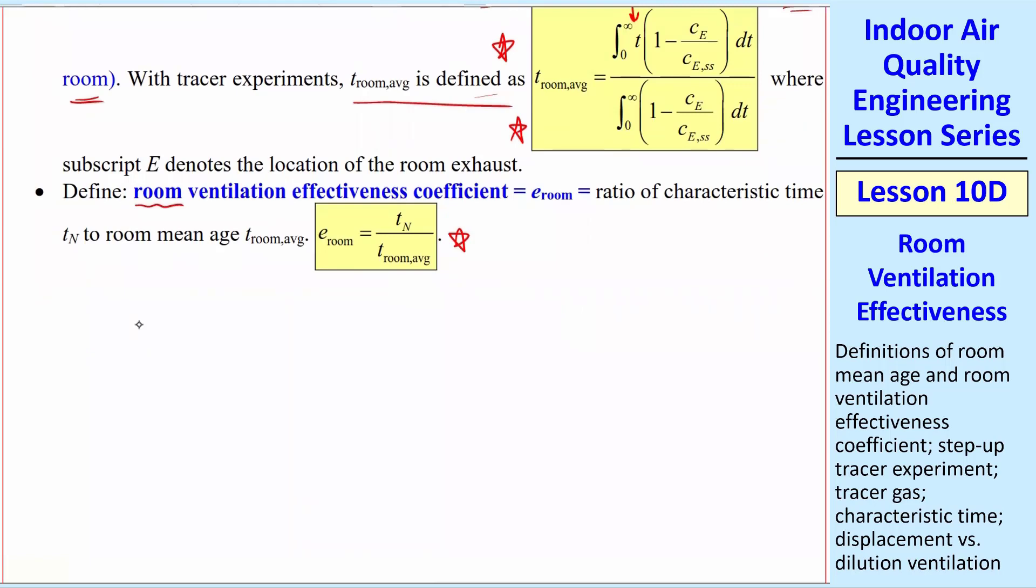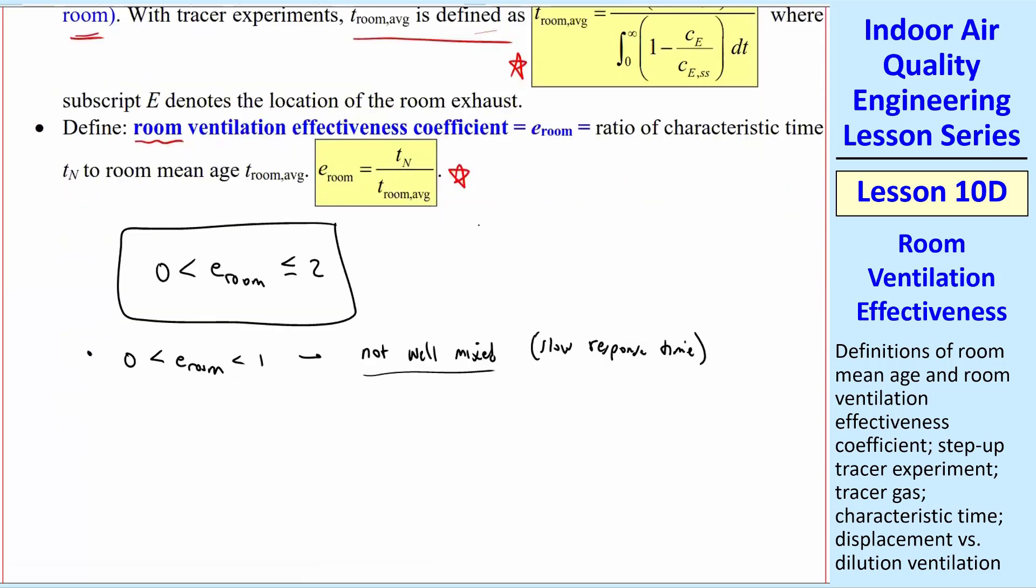Some comments. It turns out that E room varies between 0 and 2. If it's between 0 and 1, that means it's not well mixed. In other words, the room as a whole has a slow response time. So you have a ventilation system, and you don't have any kind of fans or something. There's nothing moving the air around. You're going to have pockets where it's very high concentration, pockets where it's low concentration, so it's not well mixed. We know that if we have E room less than 1.